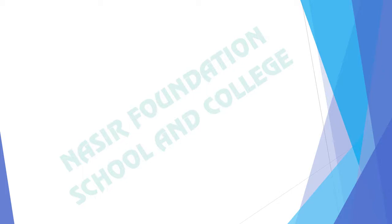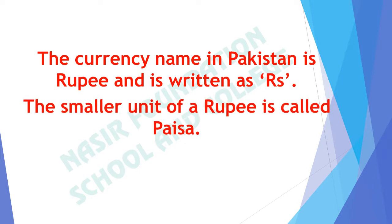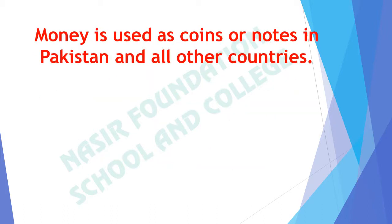To fulfill our desires or necessities, we need money. Money is used in all countries. The currency name in Pakistan is Rupee and it is written as RS. The smaller unit of a rupee is called Paisa. 100 Paisa makes 1 rupee. Money is used as coins or notes in Pakistan and all other countries.